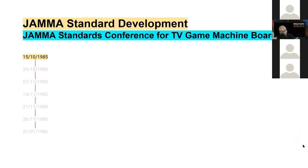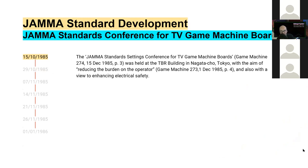A timeline of the actual development of the JAMA standards. On the 15th of October 1985, the JAMA standards conference for TV game machine boards was held at the TBR building in Nagatacho, Tokyo. The aim was reducing the burden on the operator and also enhancing electrical safety. Part of this burden was that up until the introduction of the JAMA standard, different manufacturers might have had their own standard edge connector for switching games, but there was not at that point a universal industry standard.